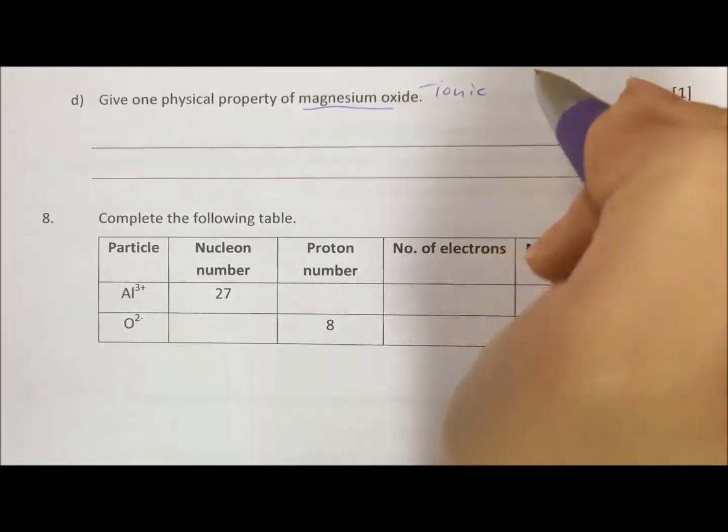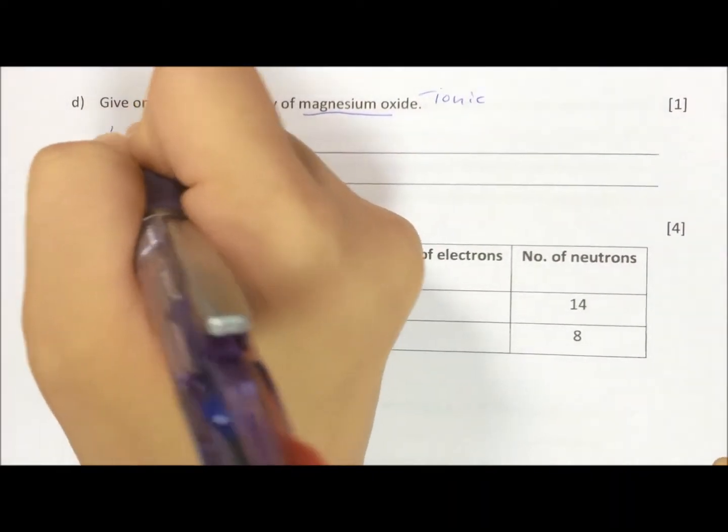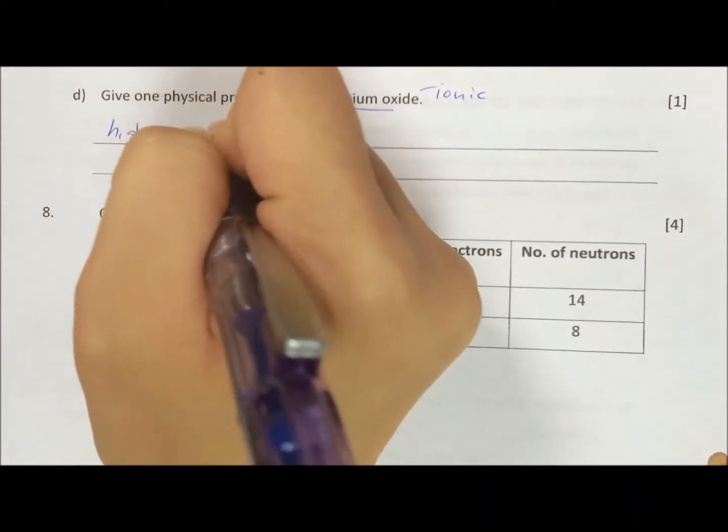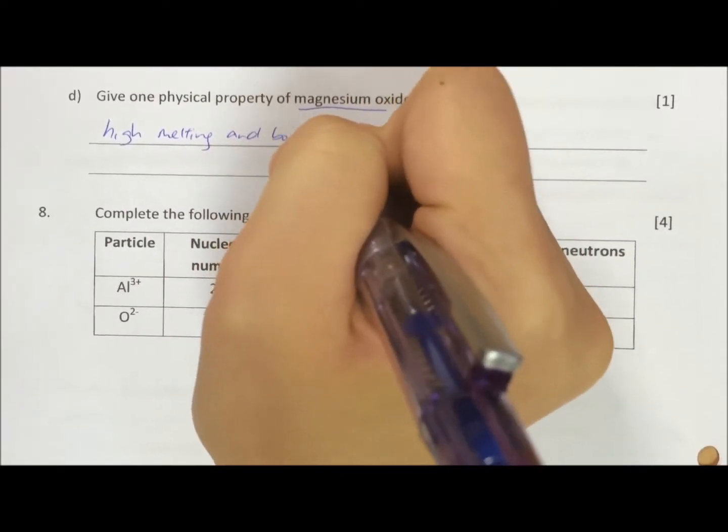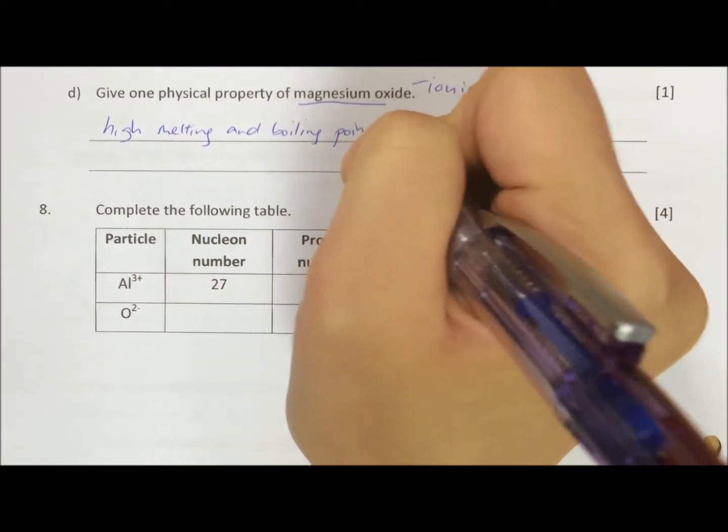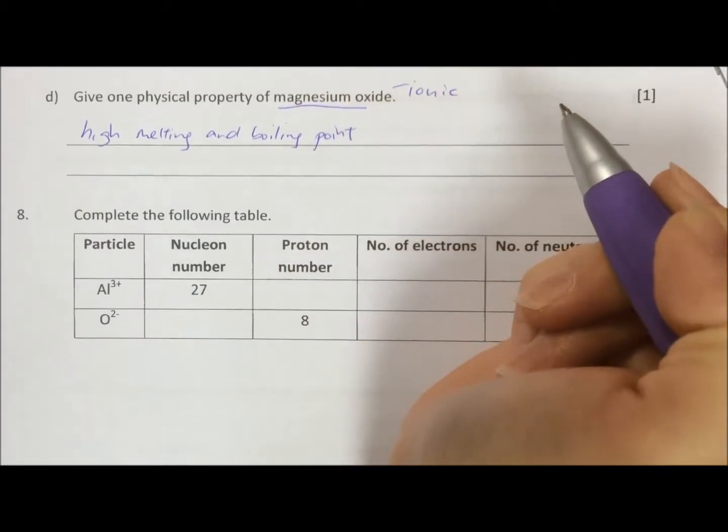Okay, part D, magnesium oxide is an ionic compound. They ask you for a physical property. So one of the possibilities is high melting and boiling point. You must write your whole thing, high melting and boiling point.